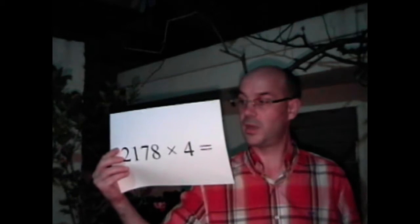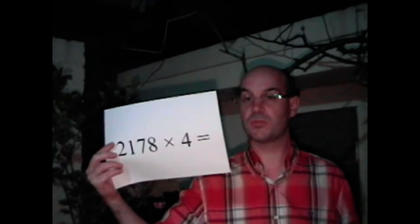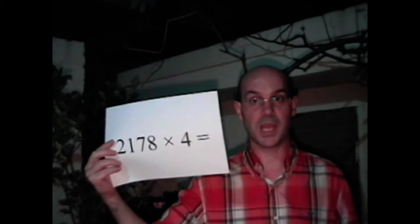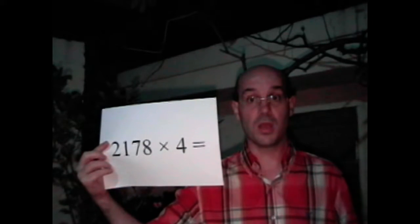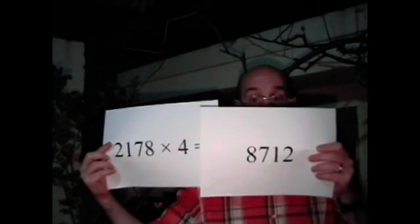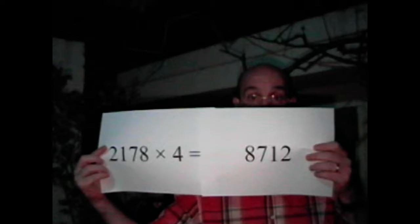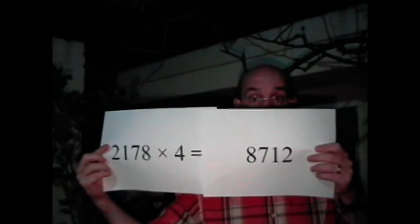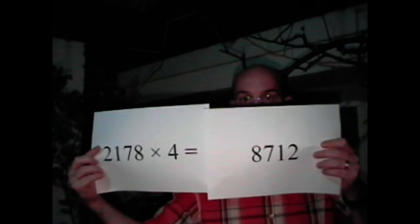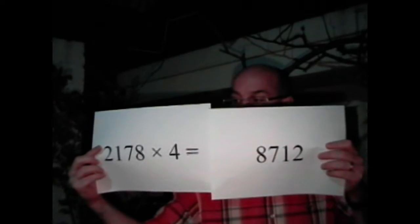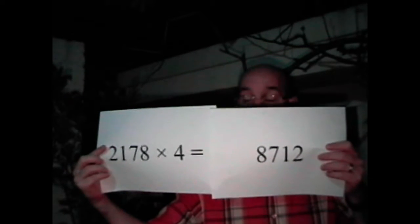When you multiply 2178 by 4, you get 8712, which by itself doesn't look like much. But if you think about it, look at those two numbers, those two big numbers.